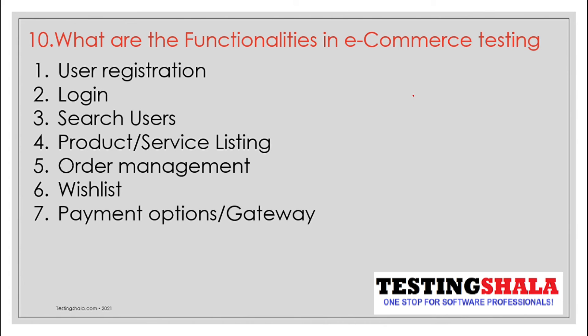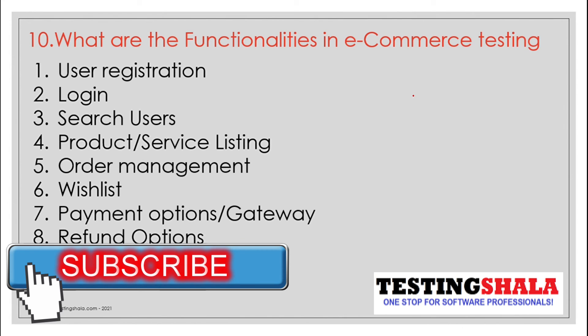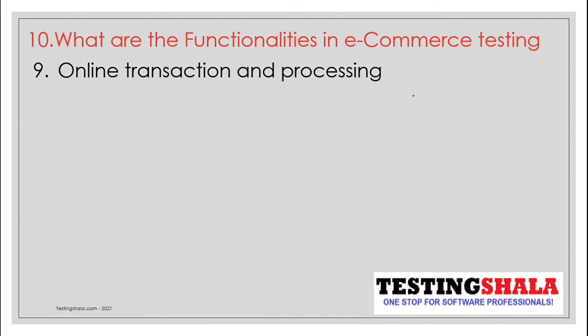Then we have wish list functionality and payment gateways with various payment options — credit card, debit card, wallets, and UPI. There is also a refund mechanism: if a customer doesn't like a purchased product, they can return it and get a refund. Online transaction processing, orders, and related flows are also part of these functionalities.